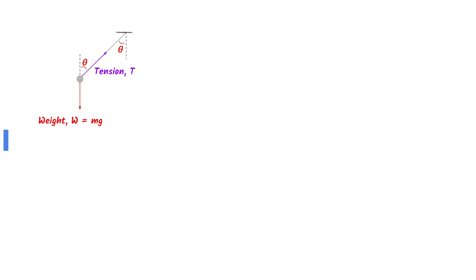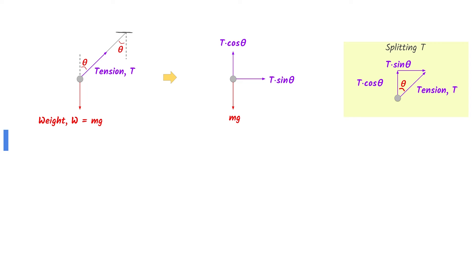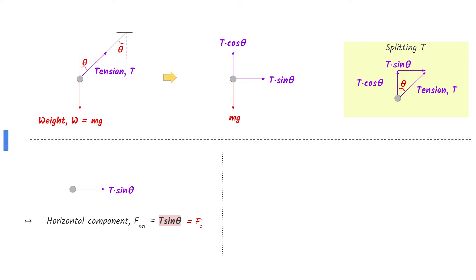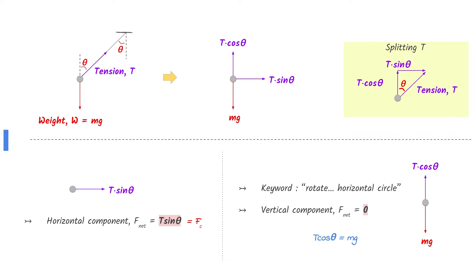Here is the free body diagram of the rotating ball. The tension can be split into its vertical and horizontal components by using trigonometry. From this diagram, we can see that the net force of the horizontal component is T sine theta. Note that this is also the centripetal force. The question tells us that the ball is rotating along a horizontal circle. This means that there is no vertical acceleration, which means there is no vertical resultant force. T cos theta equals mg.